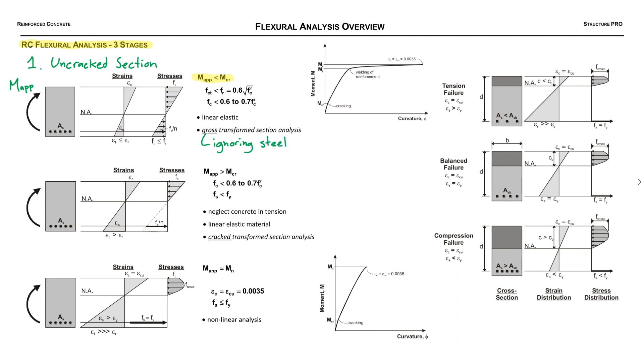We can actually just ignore the contribution of the steel when doing this analysis and use what's called a gross or overall section. Okay, the key here is to realize that the bottom strain epsilon_T, we'll call it the bottom strain fiber in tension, it is less than epsilon_R which is the rupture strain of concrete. Okay, so we haven't passed the strain at which the concrete will crack so we have an uncracked section.